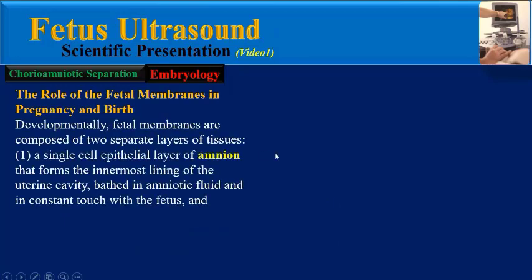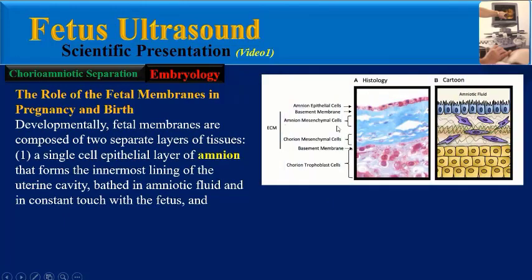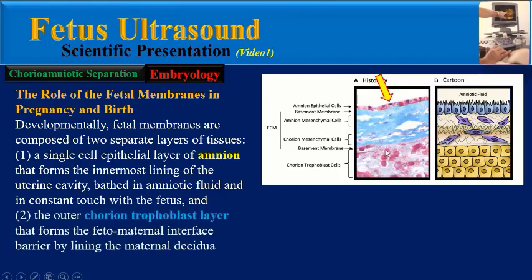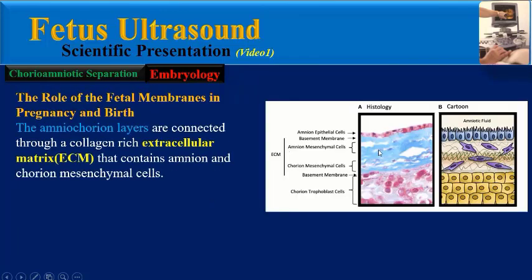Fetal membranes are composed of two separate layers of tissues. A single cell epithelial layer of amnion forms the innermost lining of the uterine cavity, bathed in amniotic fluid and in constant touch with the fetus. The outer chorion trophoblast layer forms the fetal-maternal interface barrier by aligning the maternal decidua.